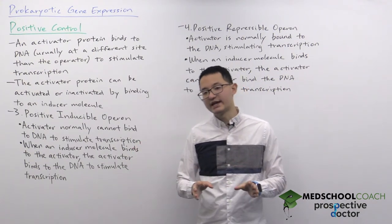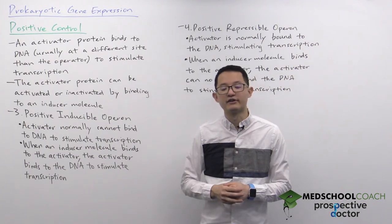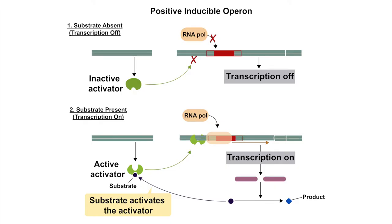To understand how this works, let's take a look at this diagram. Under normal conditions, the activator protein cannot bind to the DNA to stimulate transcription, so no transcription occurs. When an inducer molecule is present, it binds to the activator protein causing a conformational change that allows the activator protein to bind to the DNA and stimulate transcription.